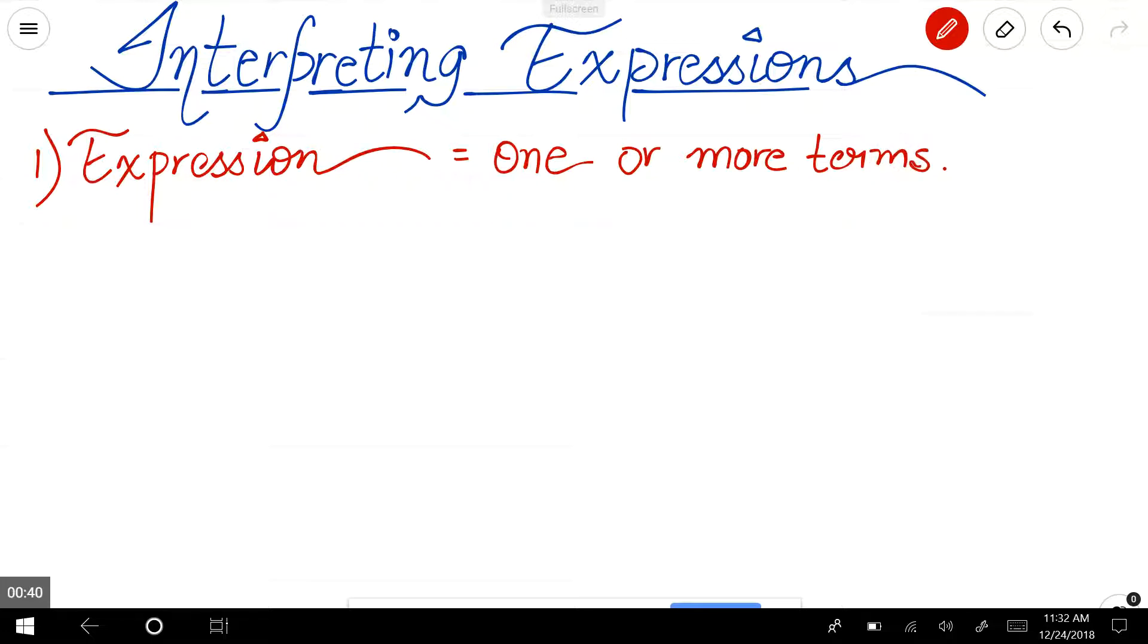An example for an expression could be 14x minus 3y. Now here we have two terms. One of the terms is 14x. The other term is minus 3y. So it is an algebraic expression with two terms.